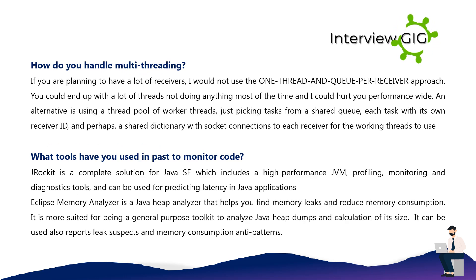How do you handle multi-threading? If you are planning to have a lot of receivers, I would not use the one thread and queue per receiver approach. You could end up with a lot of threads not doing anything most of the time, which could hurt performance. An alternative is using a thread pool of worker threads, just picking tasks from a shared queue, each task with its own receiver ID, and perhaps a shared dictionary with socket connections to each receiver for the working threads to use.